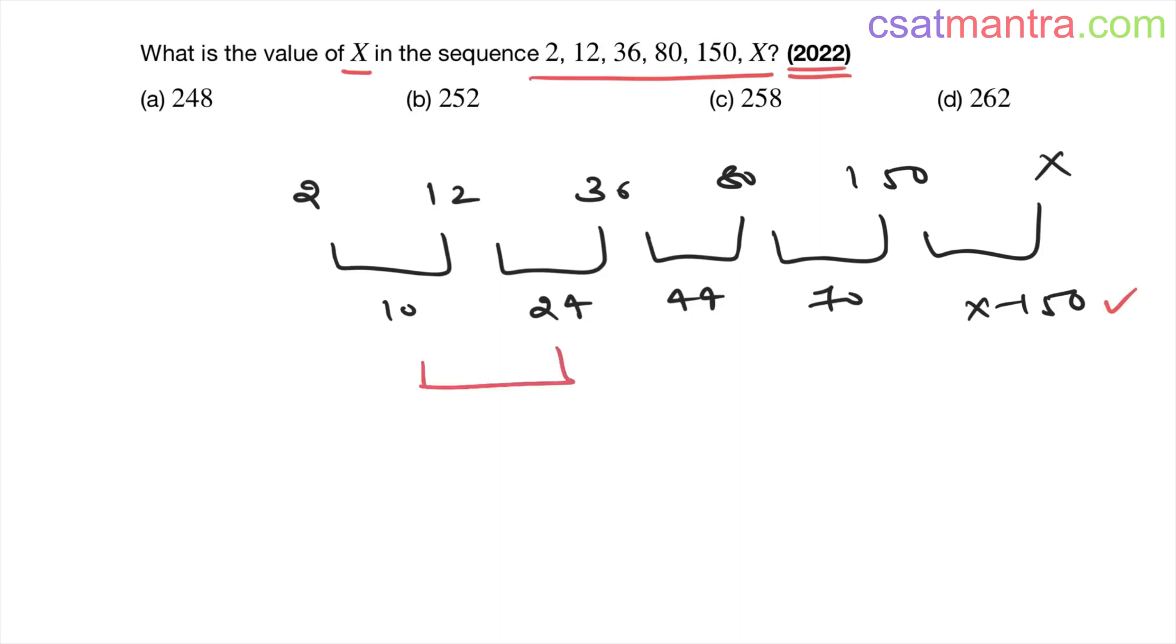24 minus 10 is 14, this is 20, this is 26. Now this difference is X minus 150 minus 70.